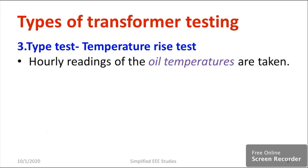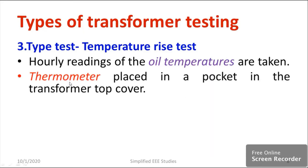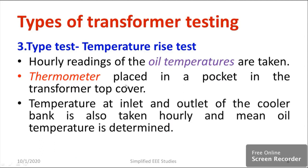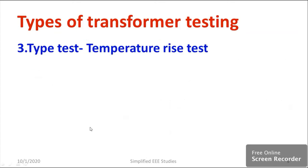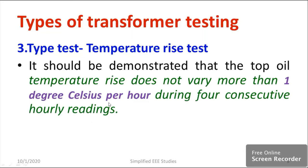We need to take hourly readings using a thermometer. The temperature at the inlet and outlet of the cooler bank is also taken per hour, and the mean oil temperature should be calculated. The ambient temperature — that is, the atmospheric temperature — has to be measured. We must ensure that every consecutive hour the temperature rise should not exceed one degree Celsius per hour.